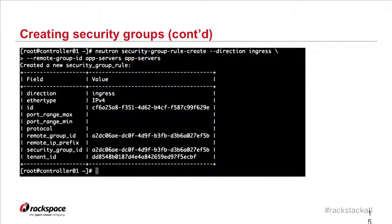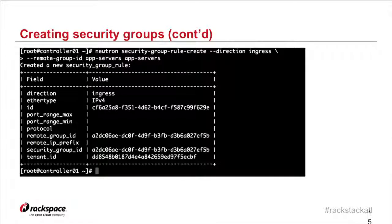When creating a security group rule, rather than specifying a source CIDR range, you can also specify another security group. This allows us to start creating tiered applications. There is a security group for proxy servers and one for application servers, where the application servers only accept incoming traffic from the proxy servers. If you're accustomed to deploying three-tier applications and setting up a DMZ, this is the exact same model you can bring into your security groups.